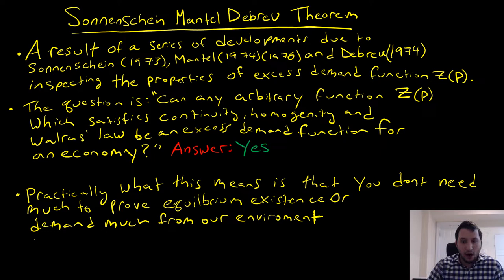They were all simultaneously inspecting the properties of the excess demand function, denoted by Z as a function of P, the price vector. The question is: can any arbitrary function Z which satisfies continuity, homogeneity, and Walras's law be an excess demand function for an economy? And the answer is yes.